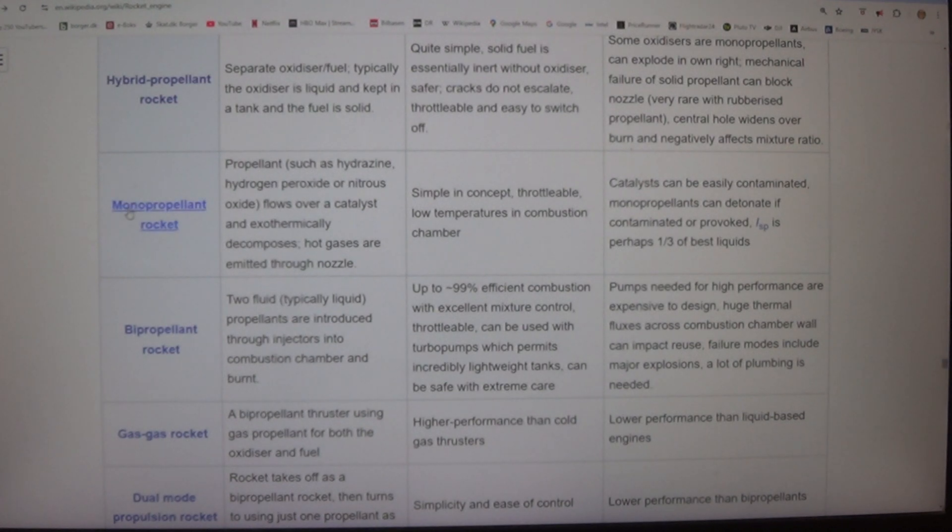Monopropellant rocket - propellant such as hydrazine, hydrogen peroxide, or nitrous oxide flows over a catalyst and exothermically decomposes. Hot gases are emitted through nozzle. Simple in concept. Throttleable. Disadvantages: Low temperatures in combustion chamber. Catalysts can be easily contaminated. Monopropellants can detonate if contaminated or provoked. ISP is perhaps one-third of best liquids.